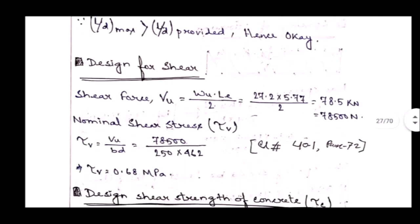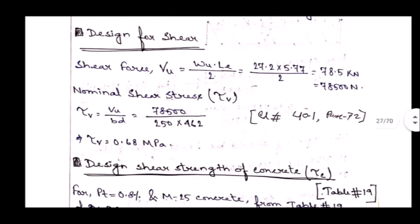The next step is design for shear. We have to design shear reinforcement, also called stirrups. First, we find out the shear force: VU = WU × LE / 2. WU is 27.2, multiplied by effective length 5.77, divided by 2, giving VU = 78.5 kN.